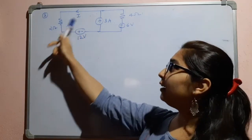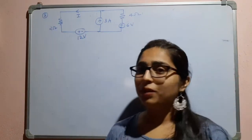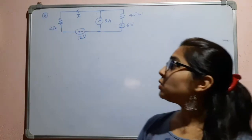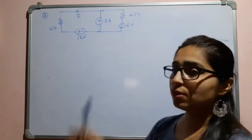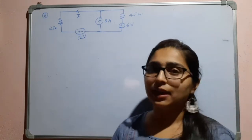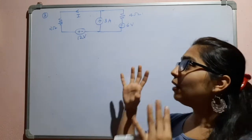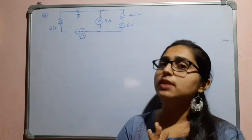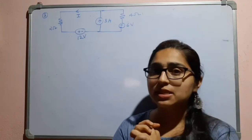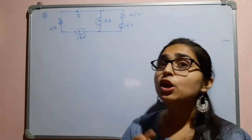We have to find the current I that is through the 2 ohm resistor. Here we have 2 voltage sources and 1 current source. We have to take 1 source at a time, that is using the superposition theorem.